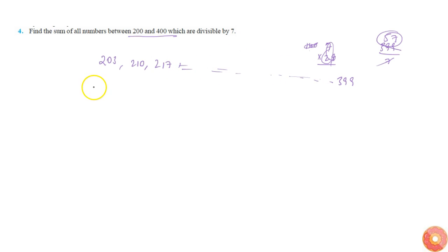This is an AP because the common difference will be 7. This is an AP series where the first term is a1, second one will be a2, that is a1 plus d. We know d is equal to 7, and a is equal to 203.